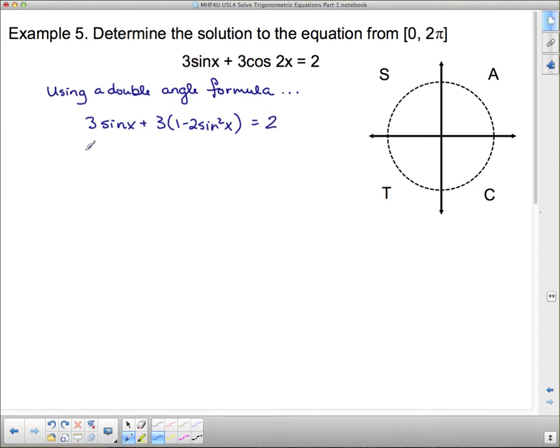So let's rearrange. We get 3sin(x) + 3 - 6sin²x = 2. This is looking quadratic, but I've got a negative in front of the squared term, so I'm going to rearrange it to get 0 on this side.